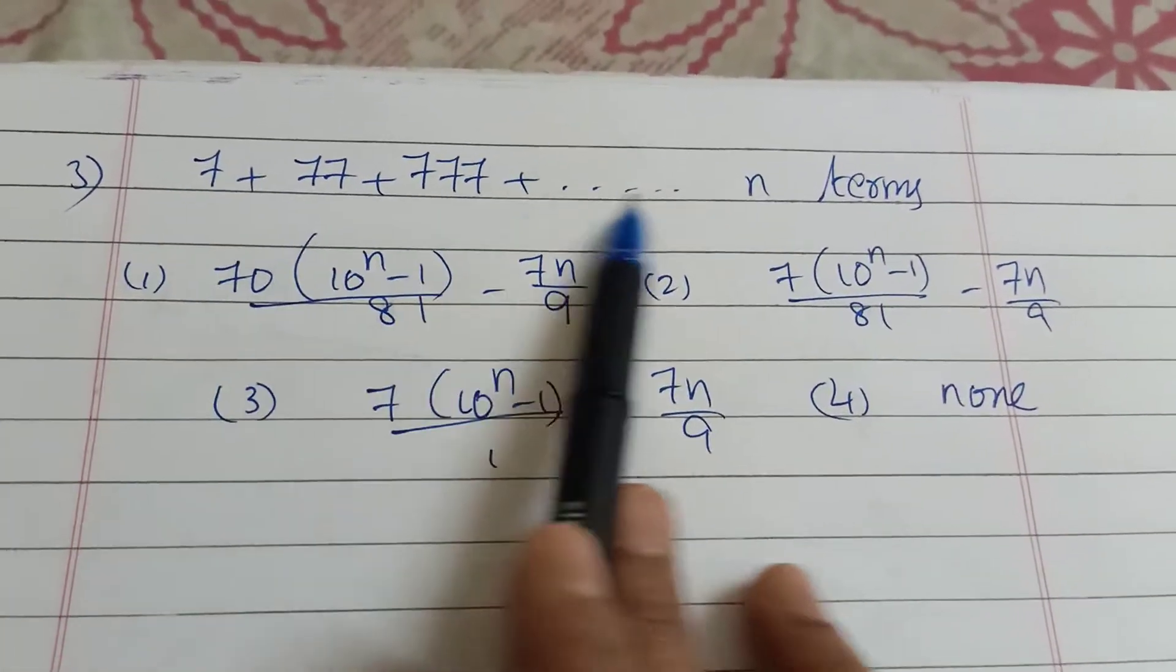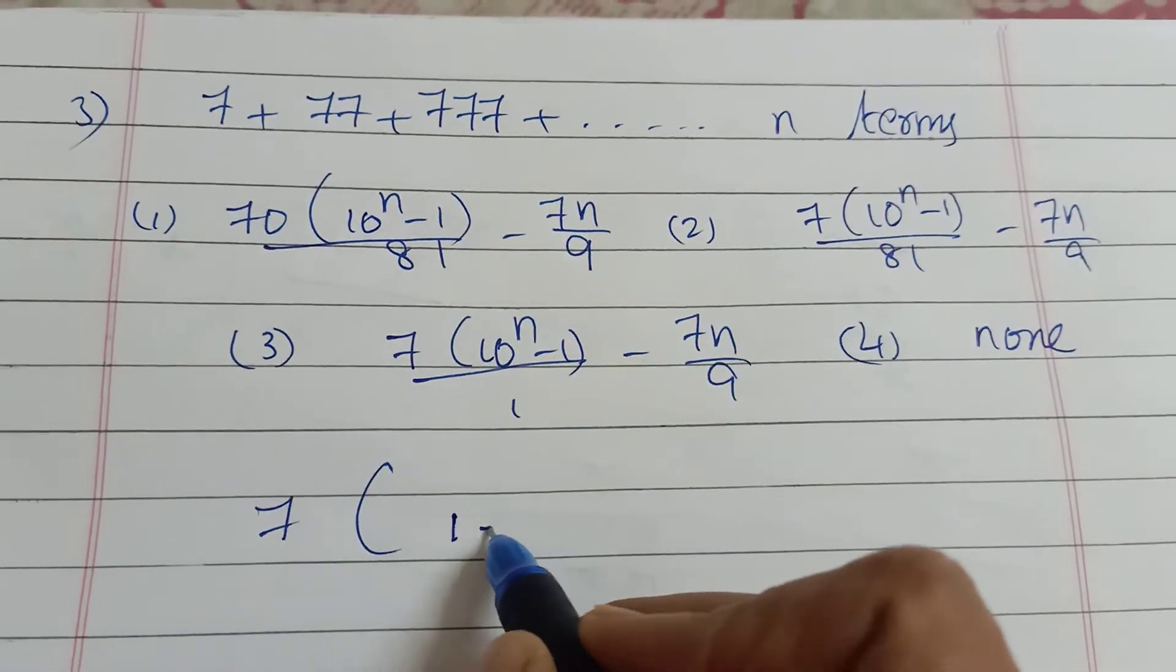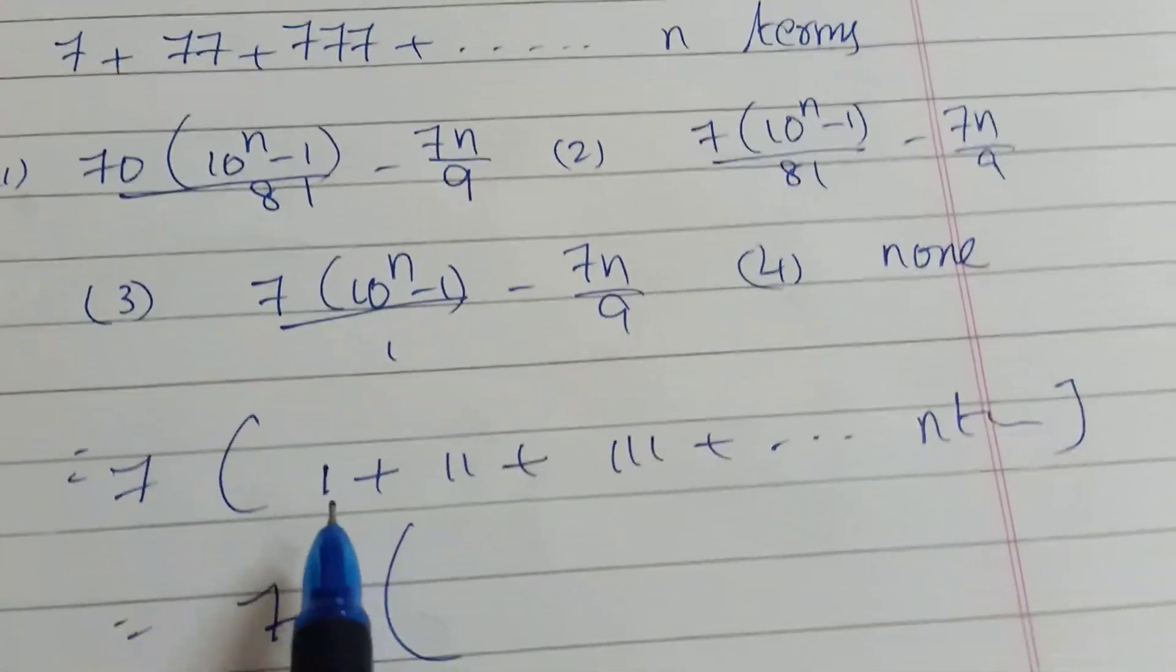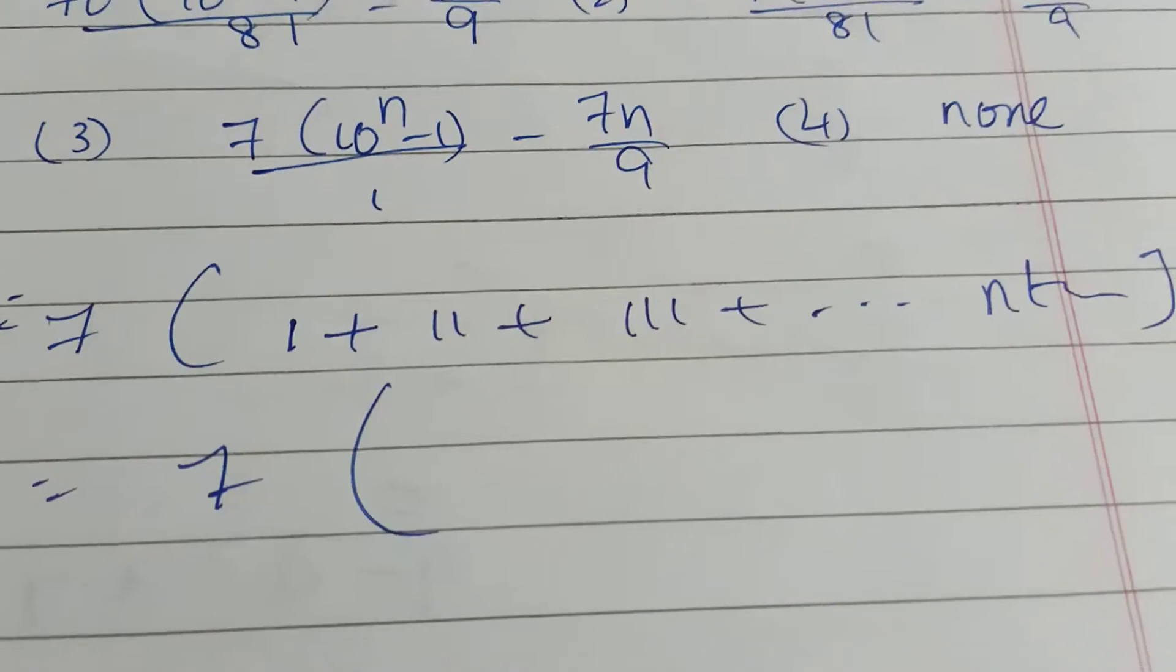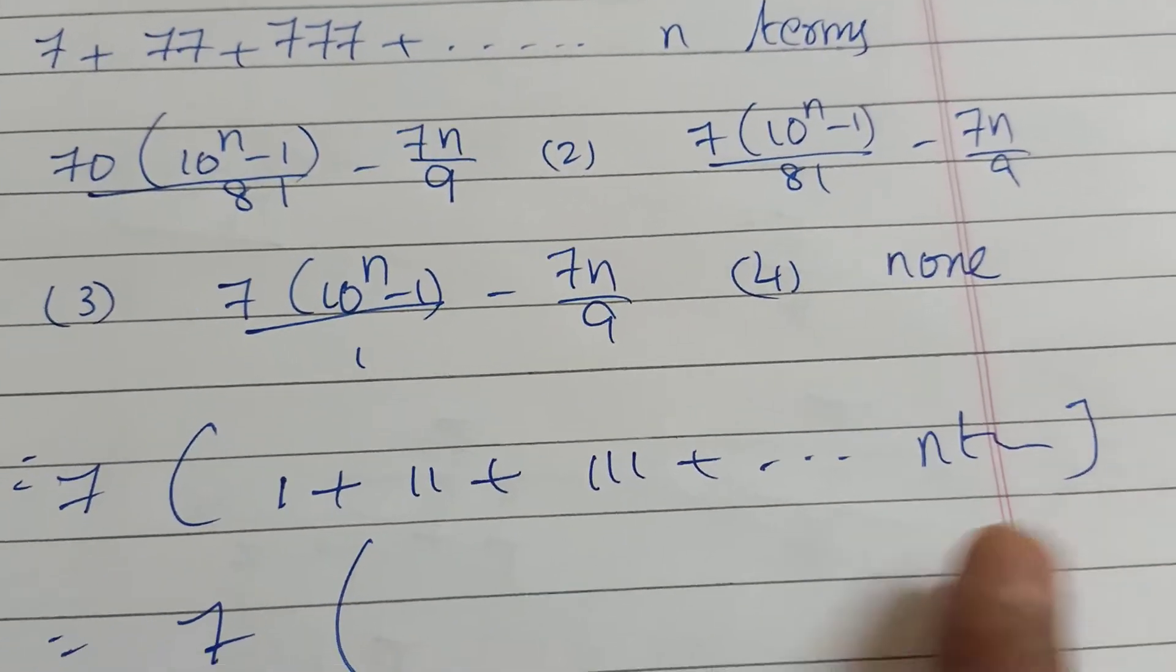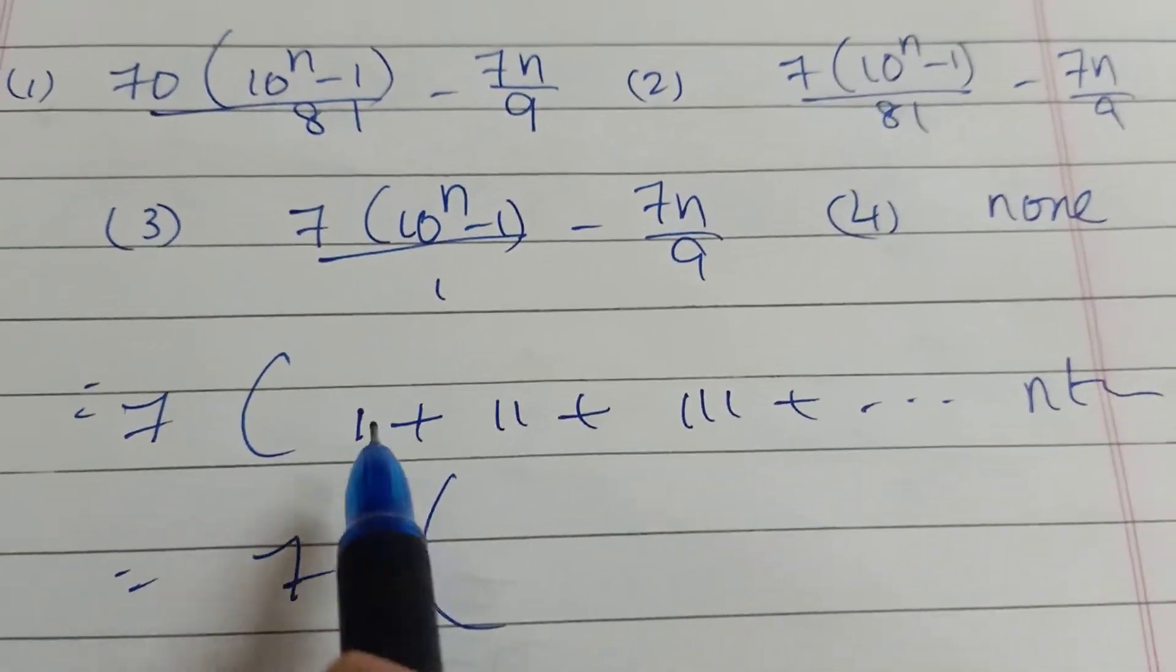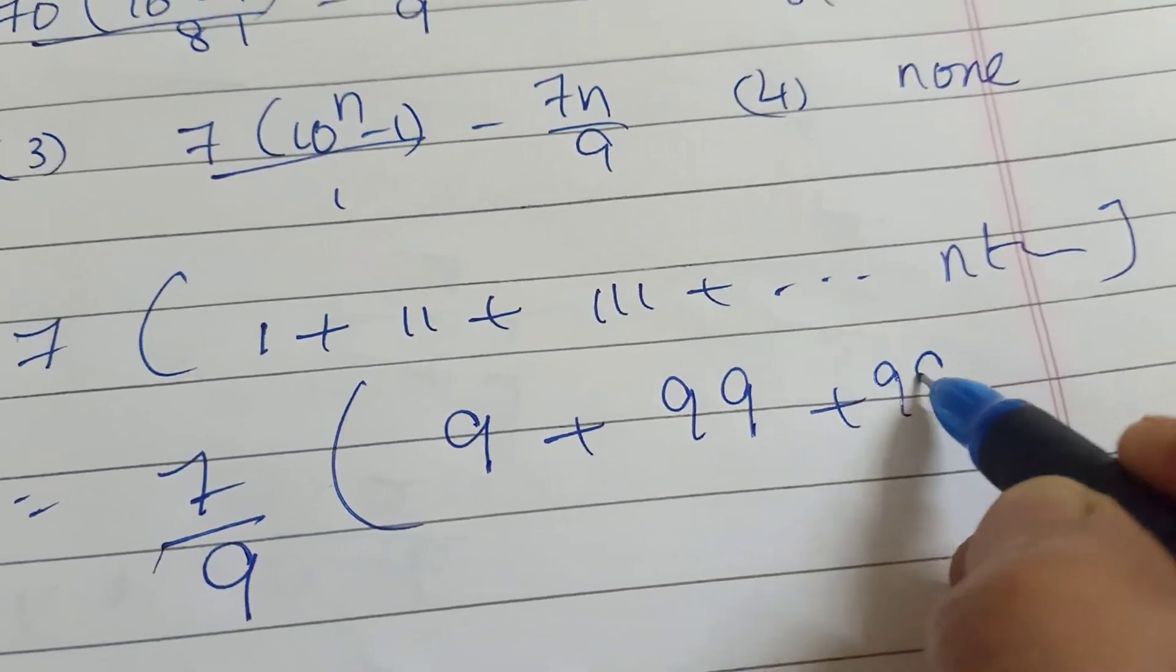We need to find the nth term. This equals 7 times a series. We can write this using fractions: 7 by 9 times (9 plus 99 plus 999 and so on). This becomes 7 by 9 times (10 minus 1 plus 100 minus 1 plus and so on).